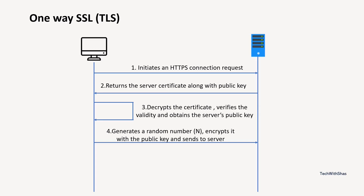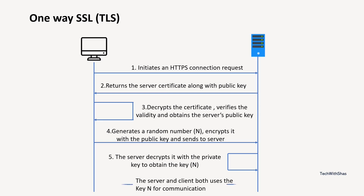This session key is encrypted with the public key of the server and sent to the server. When the server receives this encrypted pre-master key, it decrypts it with its private key. Once it decrypts the information received from the client, it obtains the actual session key. Using this session key, both client and server interact in further communication — the handshake is now completed. Both have the same symmetric information, so whenever they want to exchange data, they use this session key to encrypt and decrypt. That is how one-way TLS is established.